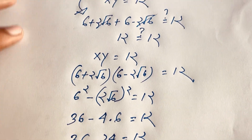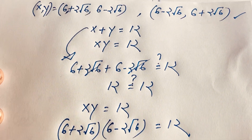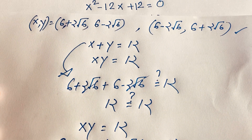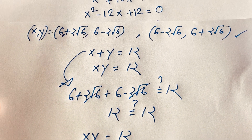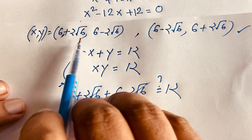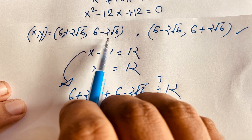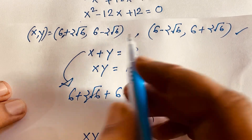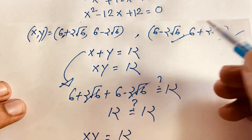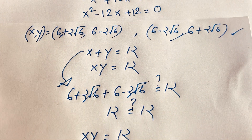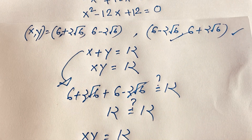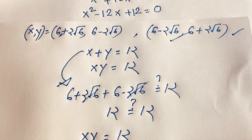So our final answer is: x and y equal 6 plus 2 root 6 and 6 minus 2 root 6. Thank you all. If you enjoyed this video, please subscribe to my channel for other interesting videos. Goodbye, take care.